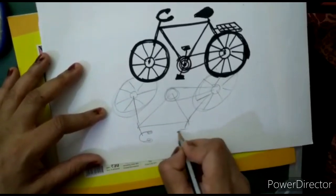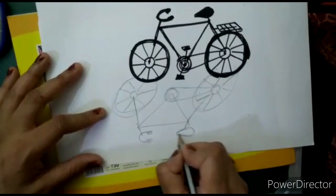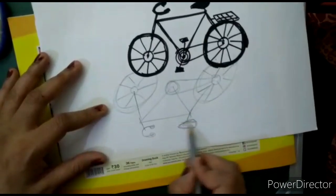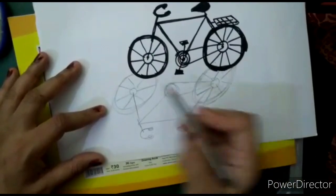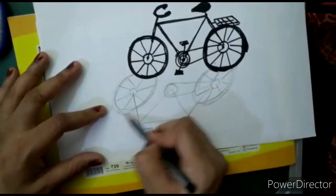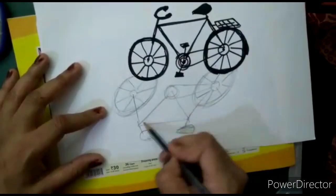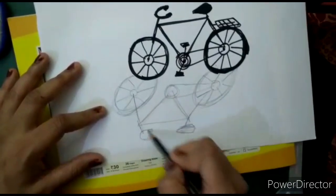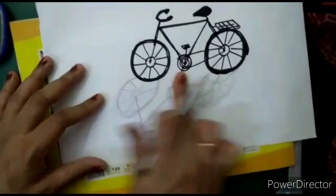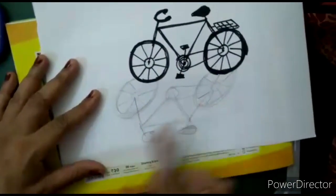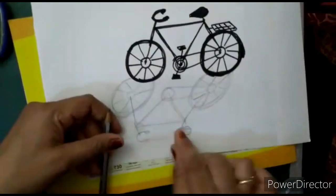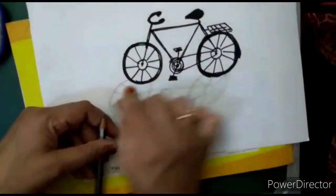And color it with the help of pencil. It should not be accurate, it will be like this only. And now rub this part like this. Done, our cycle is done, our shadow is done. Now the main part - we have to cut the upper part, so we are going to draw a line here.